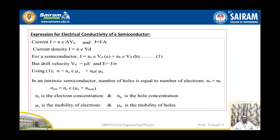Expression for electrical conductivity of semiconductors. We know that current I is equal to Ne times V_D, and current density J is equal to I by A. Further, current density J is equal to Ne times V_D. For a semiconductor, J is equal to Ne times E times V_D plus Nh times E times V_D. Consider that as equation number 1.